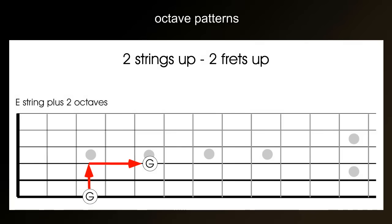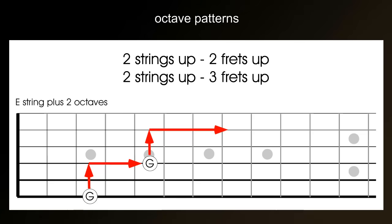The pattern doesn't have to stop here, however. We can take it up another octave to learn the names of most of the notes on the B string. To do this, we have to learn a second pattern, which goes from our second octave, which is two strings up, three frets up.